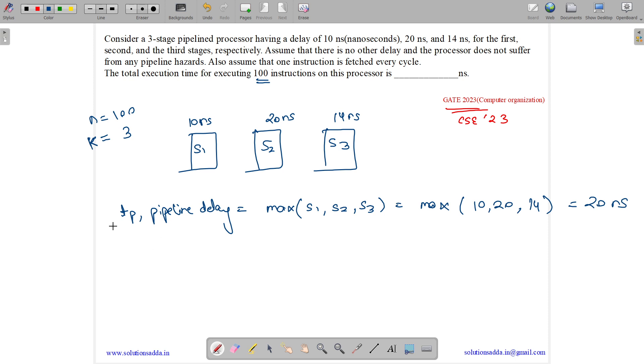Now we have a direct formula for calculating the total execution time. Let us denote it by capital T. So capital T equals to k plus N minus 1 into TP. You can use this formula directly. So we will have 3 plus 100 instructions.